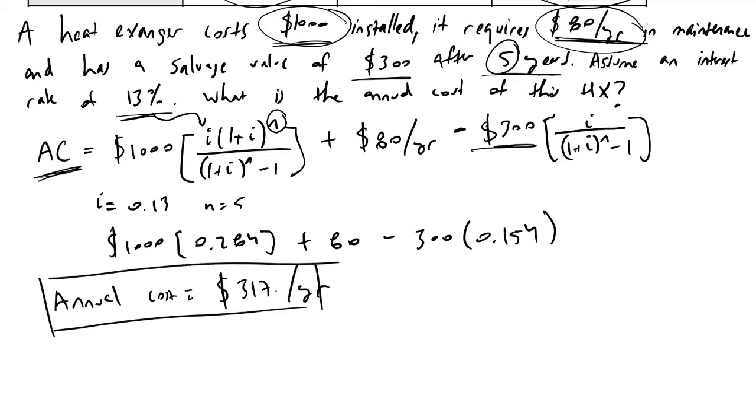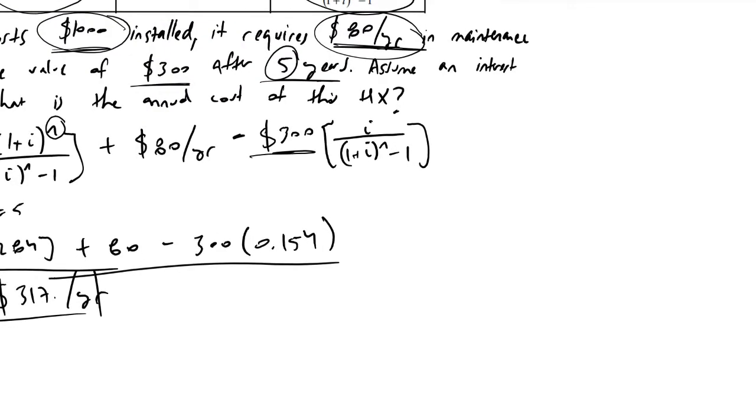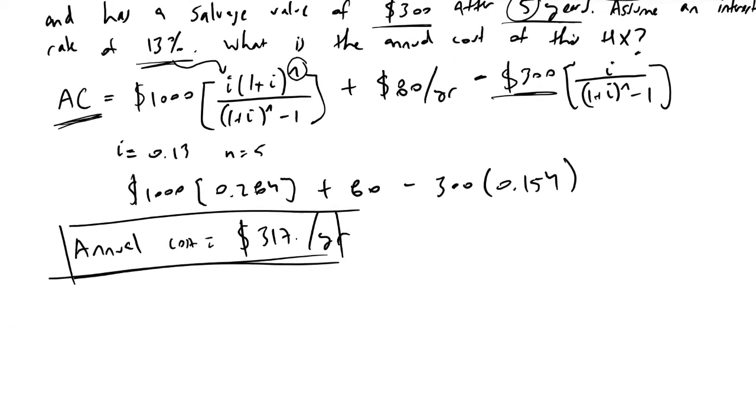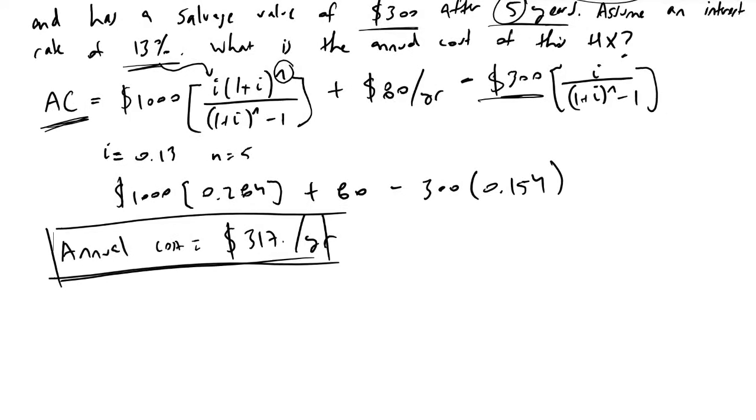And so what this tells us is that we're going to need our heat exchanger to be making or generating at least three hundred and seventeen dollars per year in profit for us to justify having it in the first place. And maybe it's an essential item that you would need regardless and so you could think of the other things beyond that, but the point is here we were able to look at the startup costs for our process and then based on an interest rate that we can get from the bank as well as a salvage value, we can determine how expensive this unit is in our process per year.